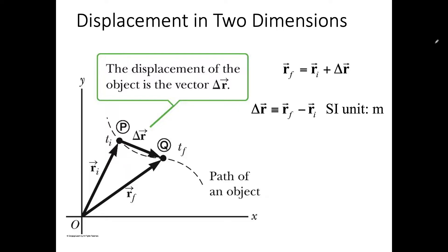In order to describe motion in two dimensions, we need to build our coordinate system in two dimensions as well. In two dimensions we have x and y directions in Cartesian coordinates, and we're only going to work in Cartesian coordinates. The x is always perpendicular to y. We have the origin, a positive x direction, and a positive y direction, and x and y are perpendicular to each other.